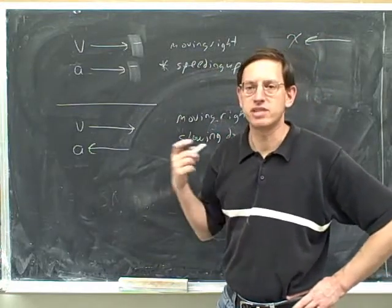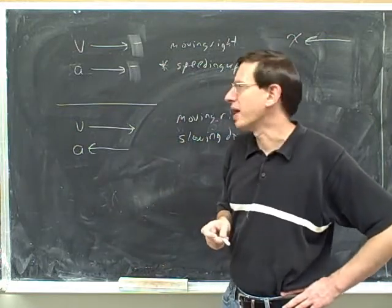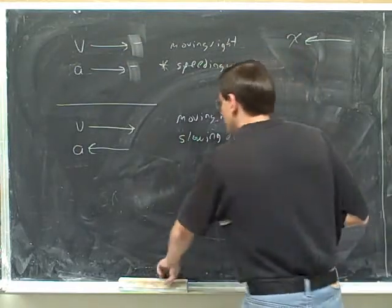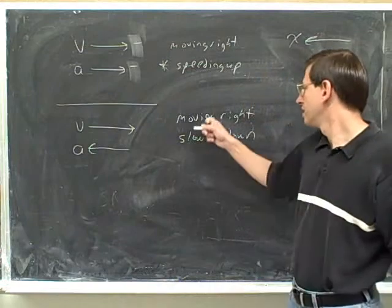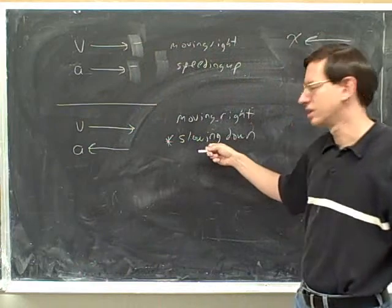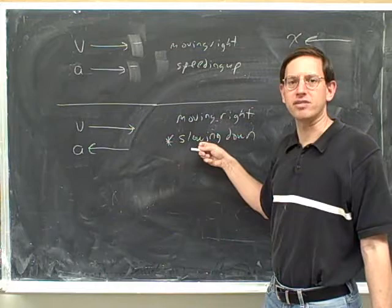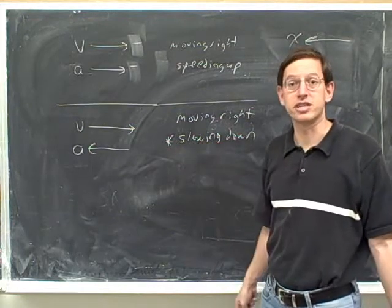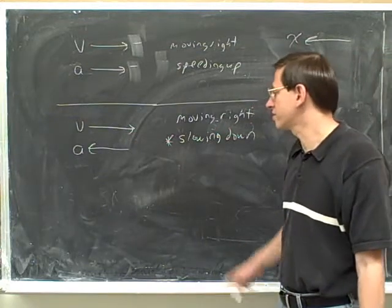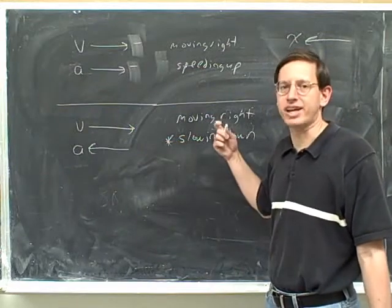Whether the acceleration is positive or negative doesn't directly tell you whether you're speeding up or slowing down. You have to compare the acceleration to the velocity. Now, if we're slowing down, is the acceleration positive or negative? That's another trick question — you can't tell whether it's positive or negative until you choose a positive direction.